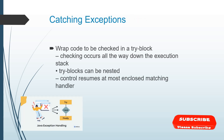Catching exceptions: wrap the code to be checked in a try block. Check exceptions all the way down the exception hierarchy. Try blocks can be nested. Control resumes at the most enclosed matching handler. You can have different try blocks and one catch block — you don't have to catch again and again. We'll also have try-catch-finally in Java exception handling, which we'll cover in part two. If you really want me to make a part two, do comment. I always come up with the basics first and then the detailed version.